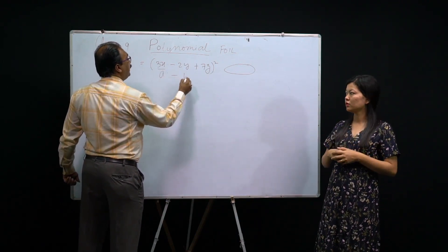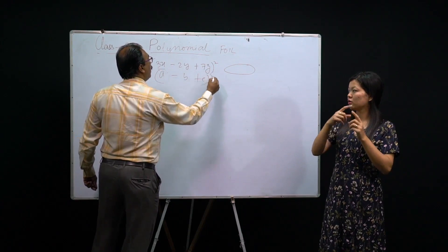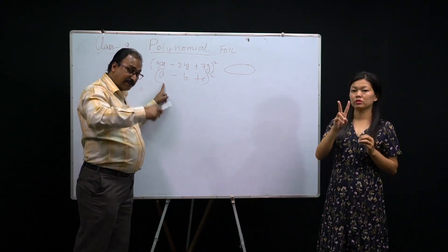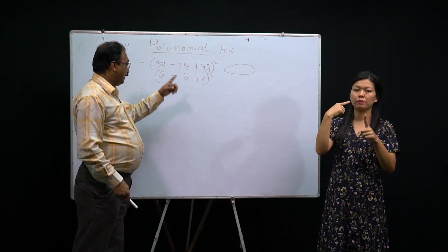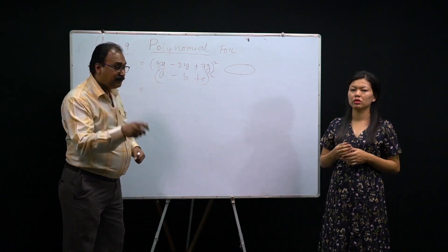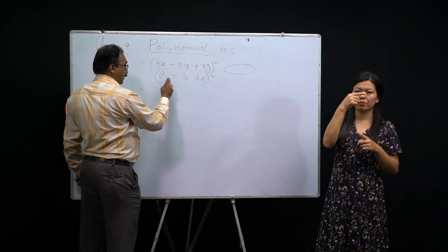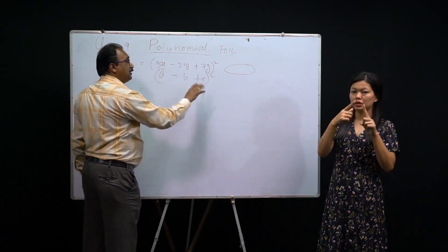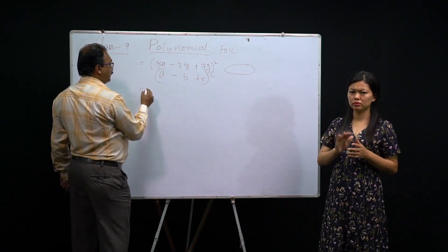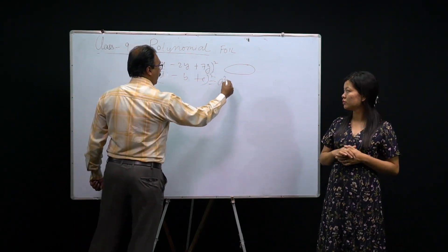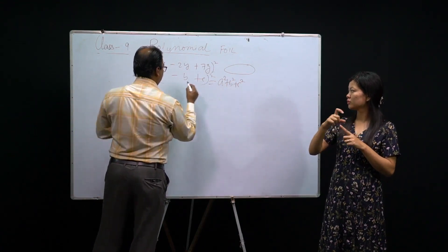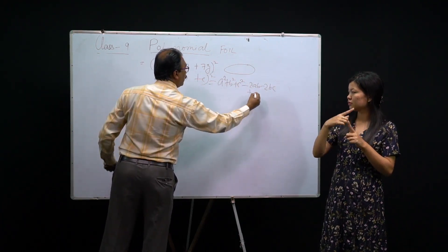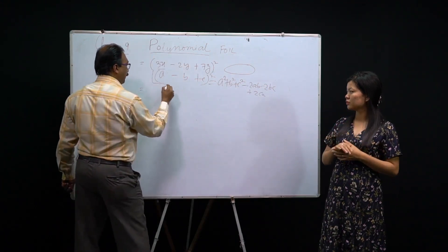What is the formula for (a−b+c)²? The squared terms are always positive: a² + b² + c². Then for the product terms, track the signs: (a)(−b) gives −2ab; (−b)(c) gives −2bc; (c)(a) gives +2ca. So the formula is: a² + b² + c² − 2ab − 2bc + 2ca.